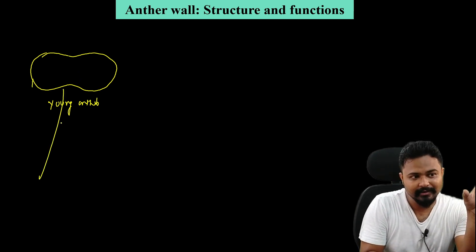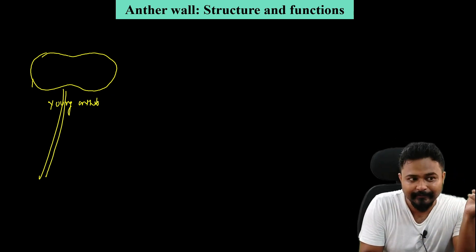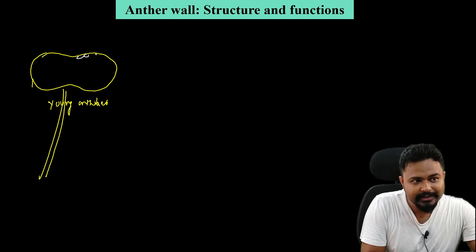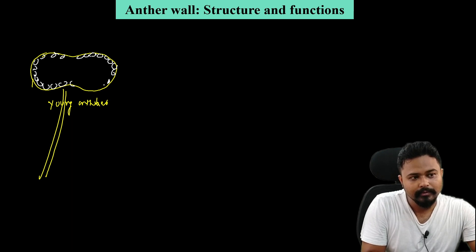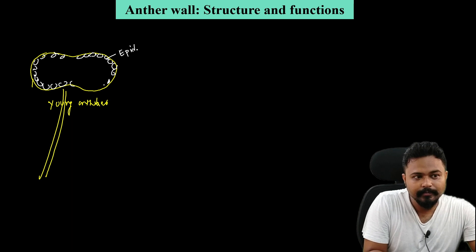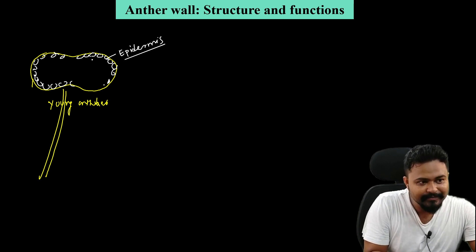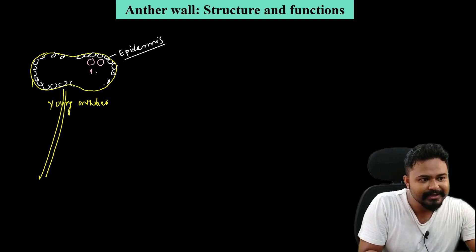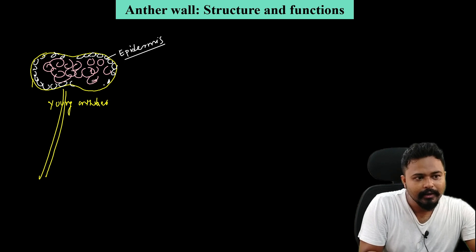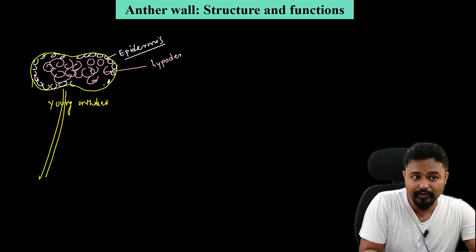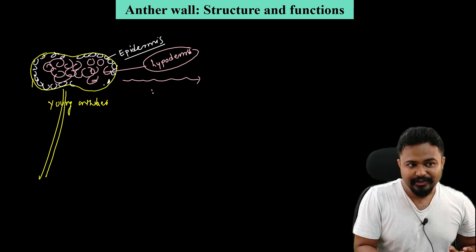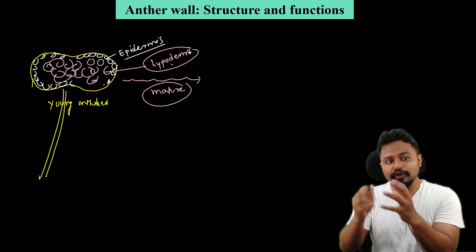The anther has layers. This is the outermost layer — the epidermis. Below the epidermis is the hypodermis layer. The hypodermis contains normal cells, and these bitter and black cells indicate that normally the hypodermal layer is present here.